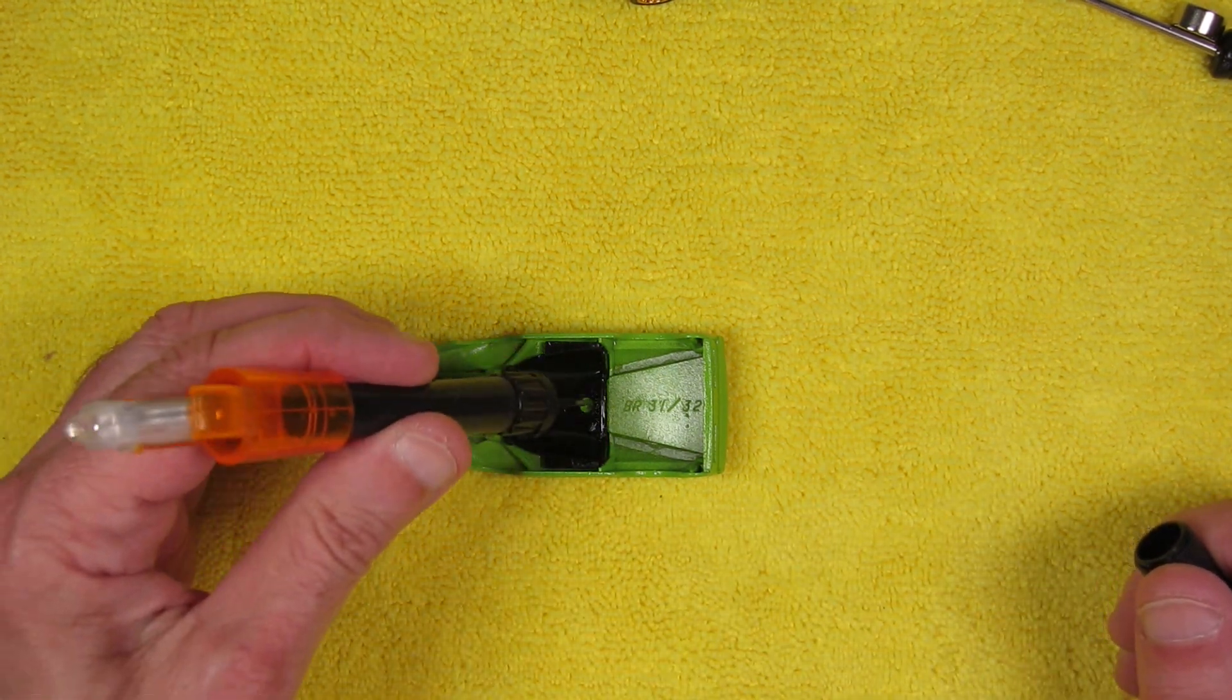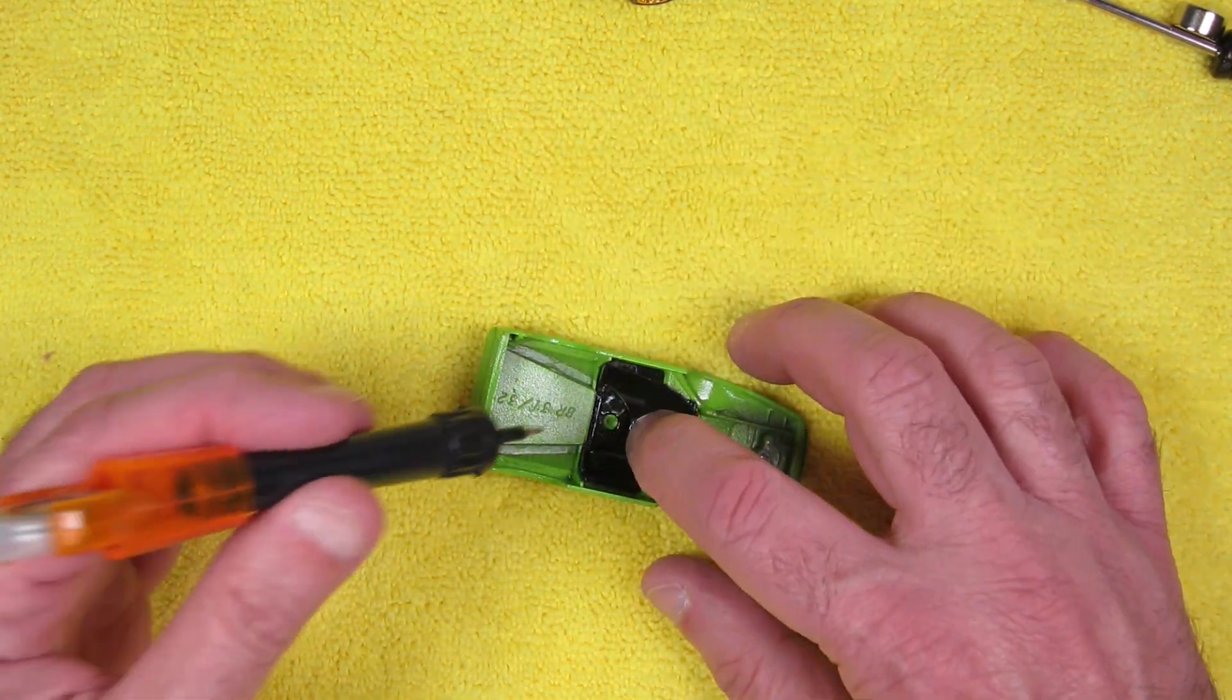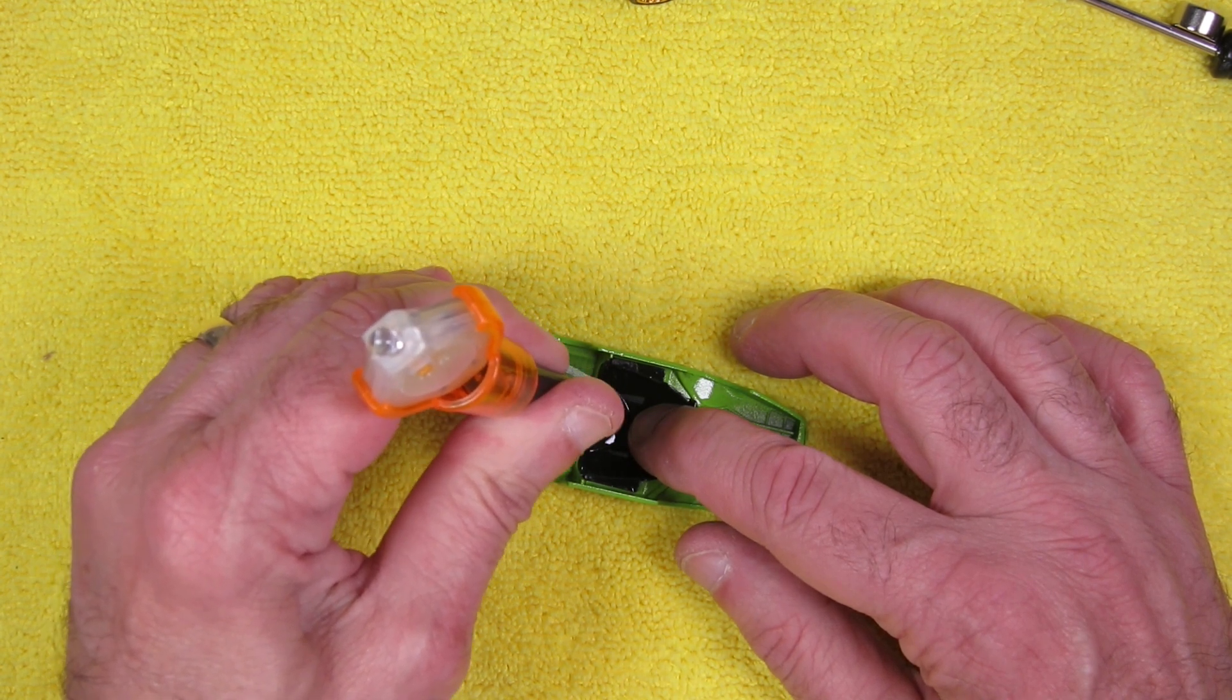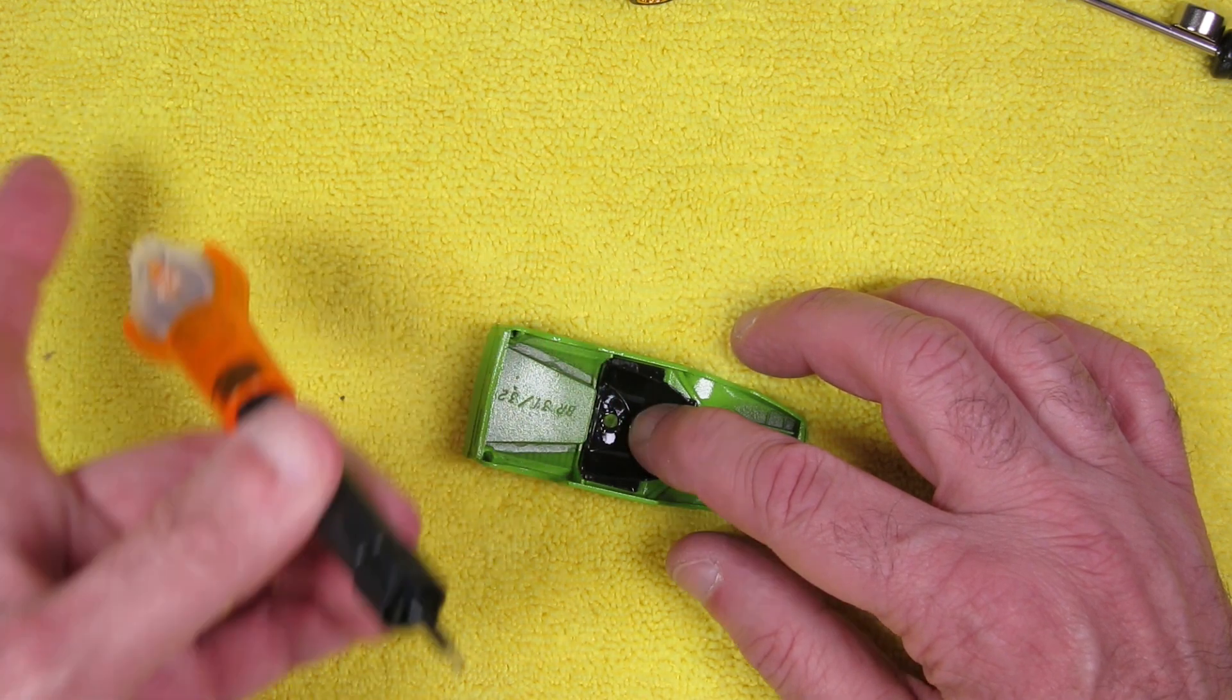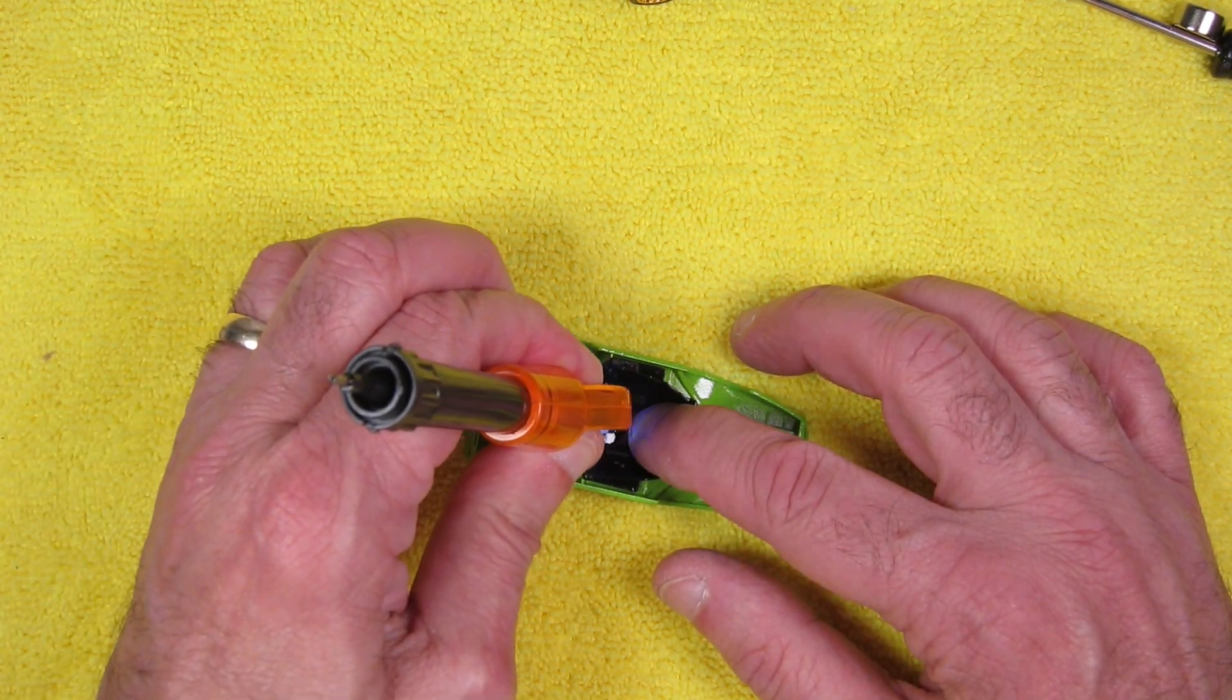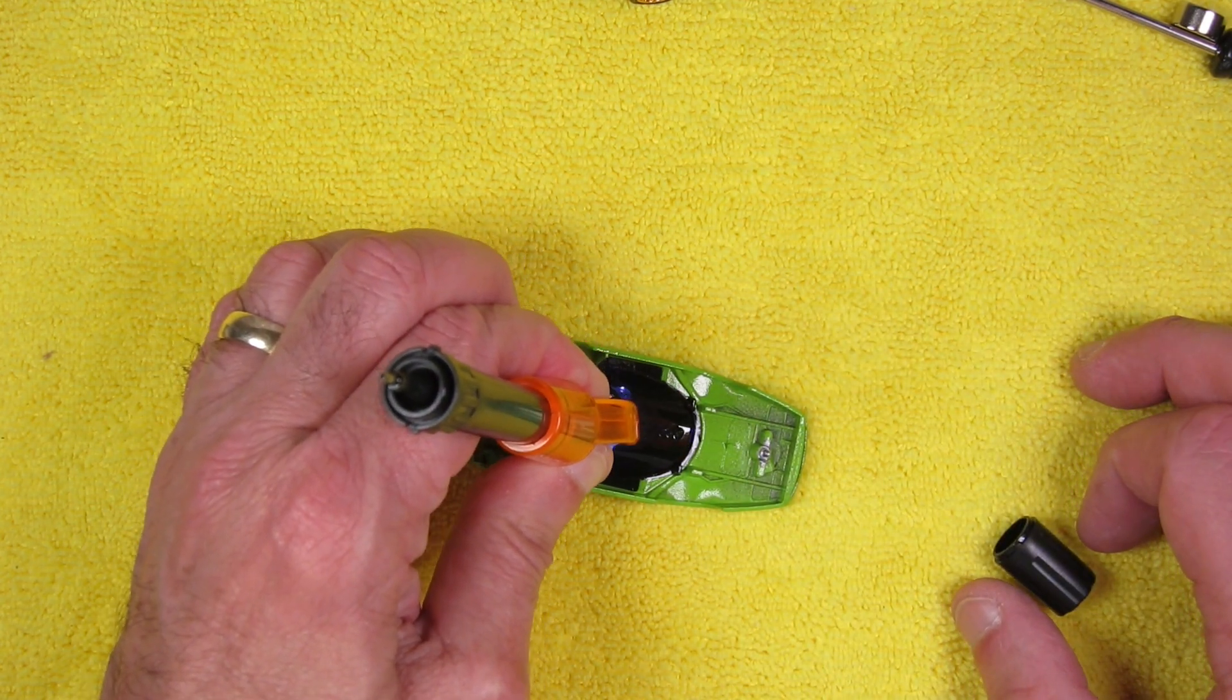For that, I used the Bondic resin pin. I didn't want to mess with CA glue on this. I thought I'll just use the resin, it will hold well. And so you just put a little of the resin there on the post, a little around it to make kind of a little cap. And then the UV light on the resin pin cures that resin, and it does it really quickly. And that's all it takes.